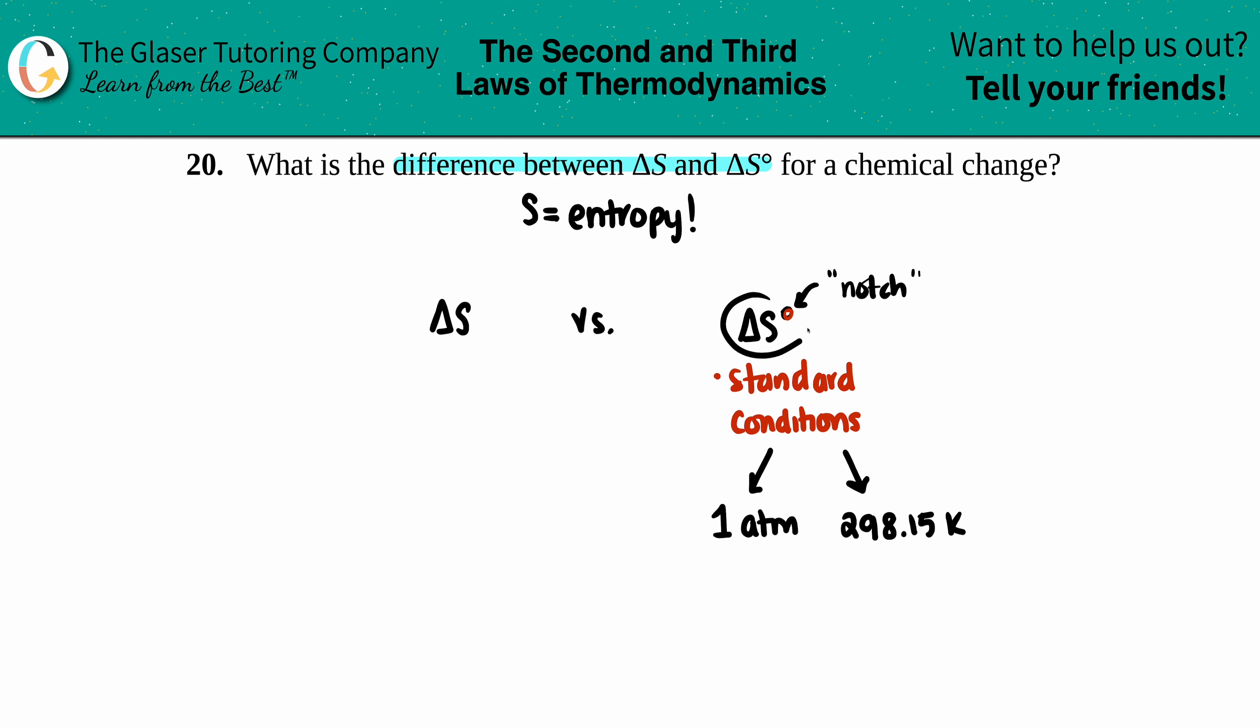So those are your standard conditions. Anytime that you're finding out a delta S value that's a notch value, standard, you have to be under a pressure of one atm and a temperature of 298.15. So this is your P value, this is your T value.